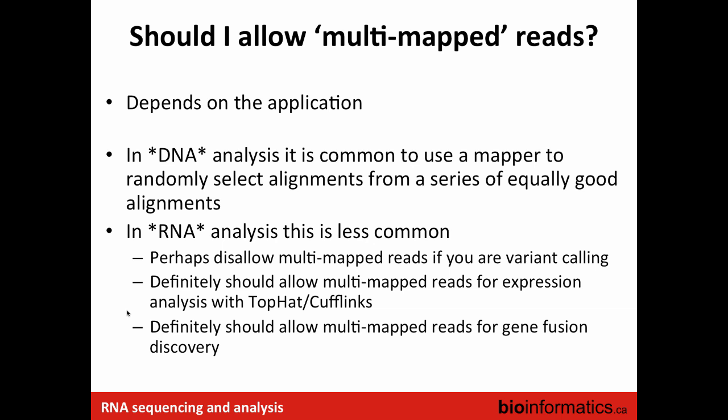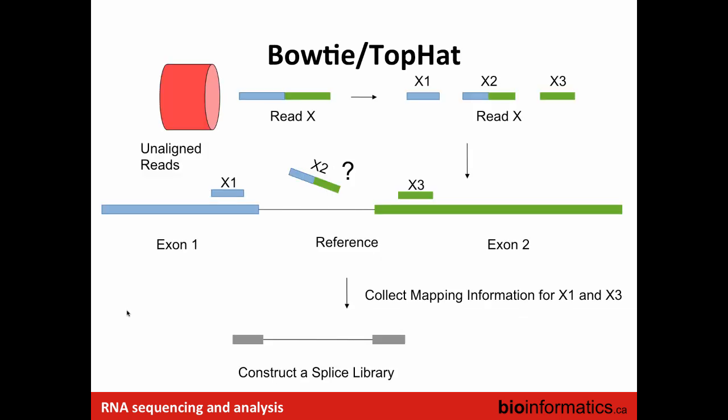Should you allow multi-mapping in TopHat or in RNA-seq? It really depends on the application. When dealing with DNA-seq, a read can map to multiple places. Depending on the tool and what you want to do, sometimes you can report all reads that map to multiple places, and the tool can either randomly pick the best alignment or pick the one with the highest quality. With RNA-seq, if you're planning on doing variant calling, I'd say perform the same as DNA and try not to allow multi-mapping.